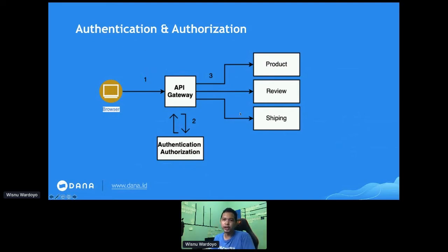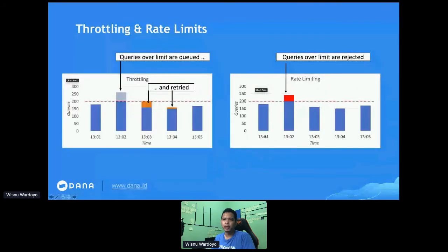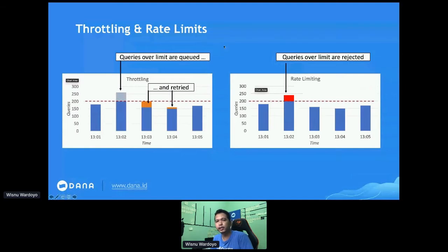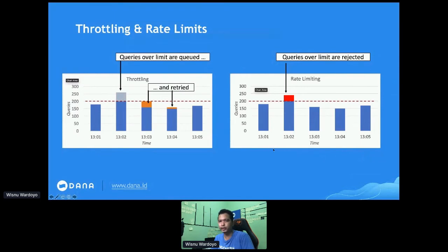The second problem solved by the API Gateway is throttling and rate limiting. In general, rate limiting and throttling have the same result: making sure the number of requests does not exceed a certain criteria or count. Let's say our criteria is that in one second, the number of requests should not exceed 200. When using rate limiting, the API Gateway will only accept the first 200 requests.